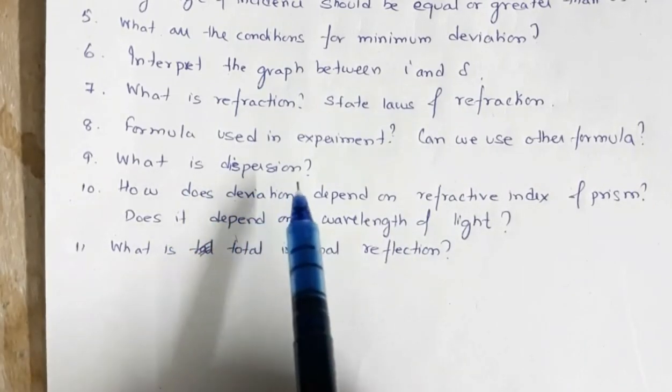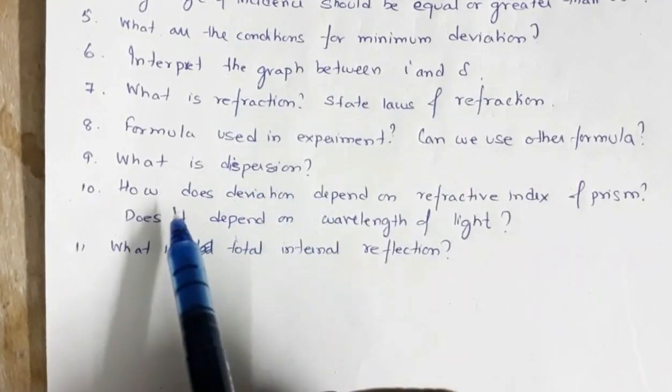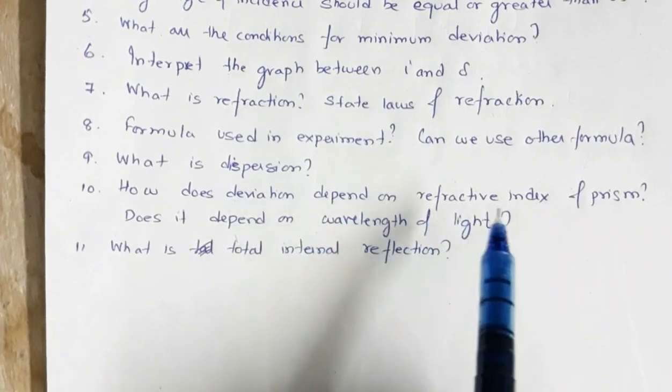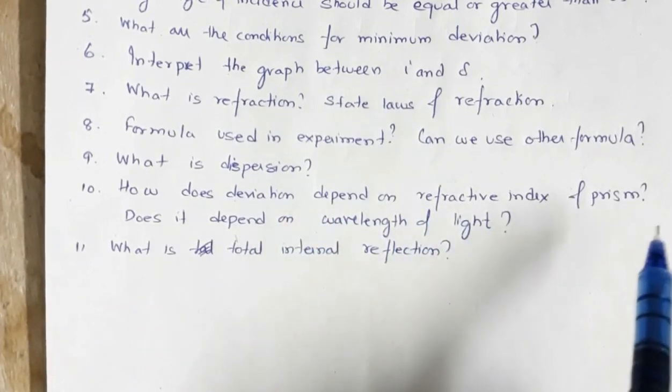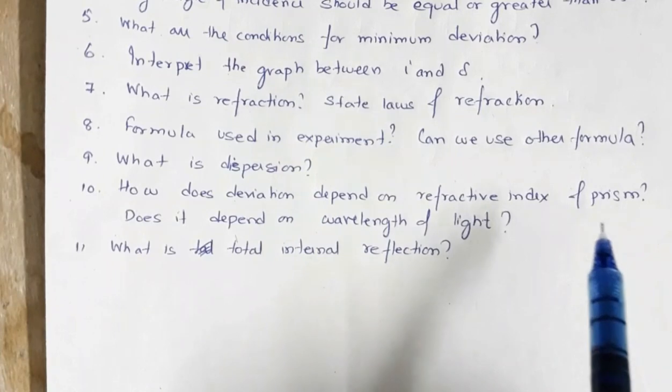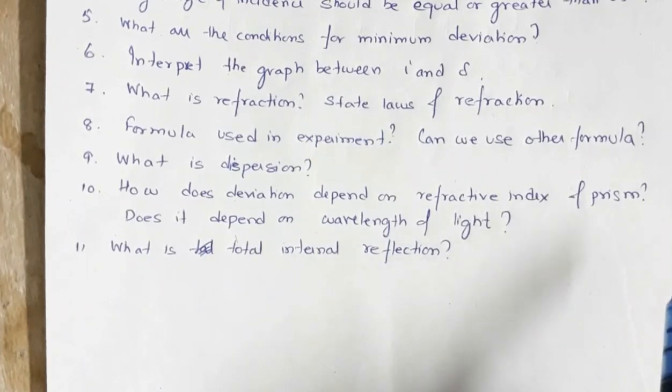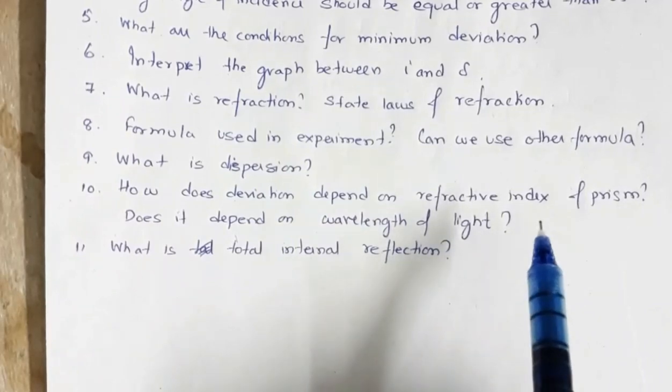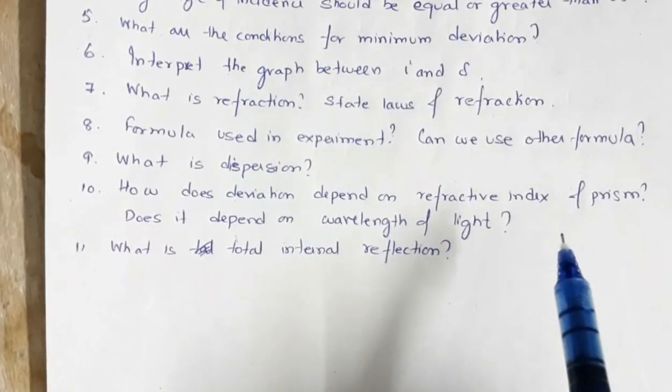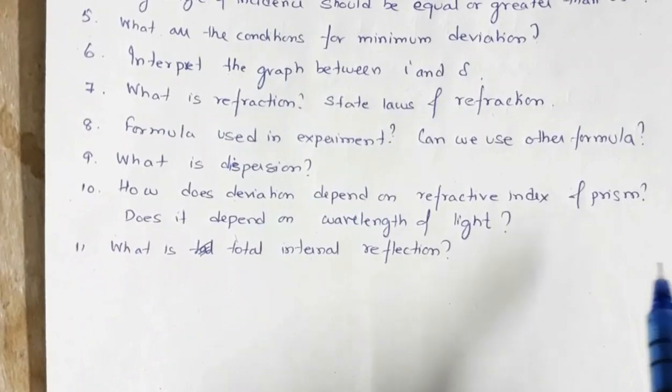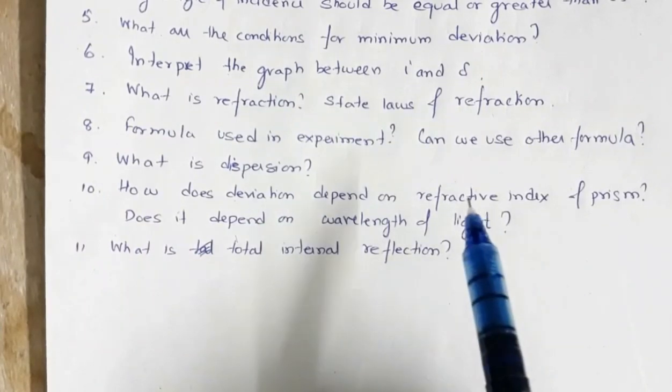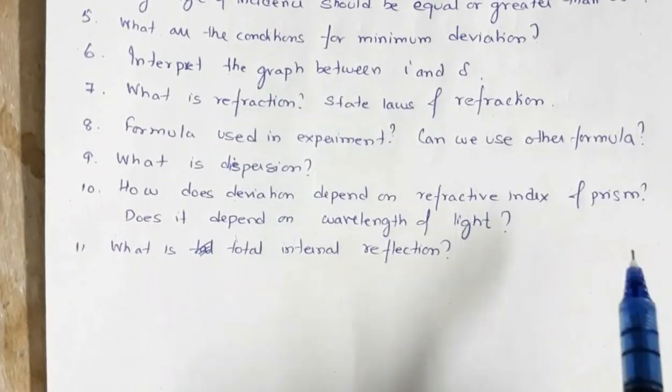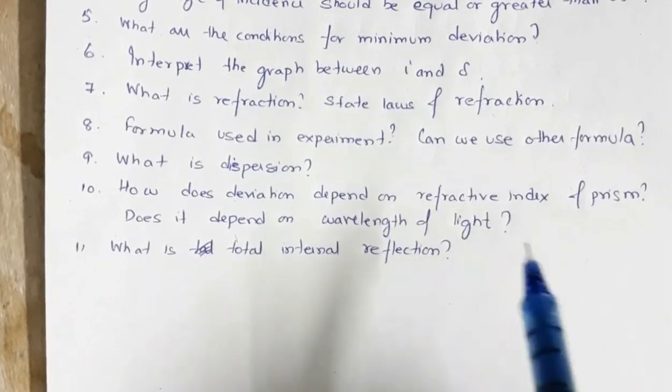What is dispersion? It is a splitting of light. How does deviation depends on refractive index? Delta is equal to a times mu minus 1. So, delta is directly proportional to the refractive index. Does it depend on wavelength of light? Yes, because delta depends on refractive index and refractive index is inversely proportional to wavelength by Cauchy law. That means deviation is also dependent on refractive index and wavelength.